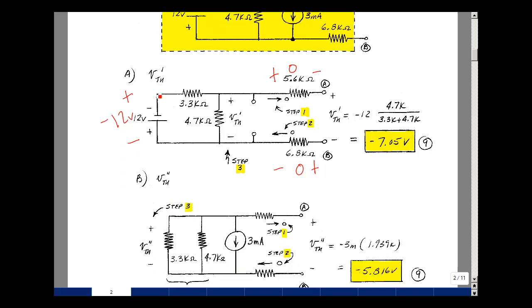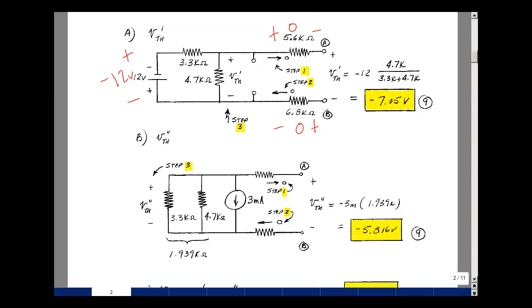Set this voltage source equal to zero, now we'll have the 3.3K in parallel with the 4.7K. Put the current source back in, and with no current coming in or out, I have no drop across these resistors. So the voltage V Thevenin due to the second source is the voltage across this parallel combination. With this polarity, I need to find the current going in this direction. That's going to be equal to minus 3 milliamps times the parallel combination, 1.939K. The voltage then is the product of those two, minus 5.816. This was worth nine points, no partial credit.